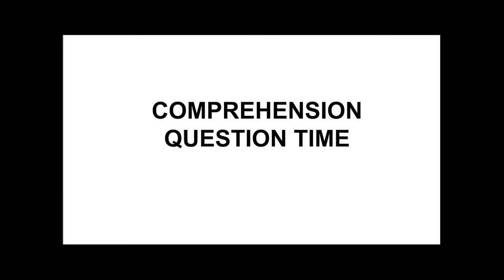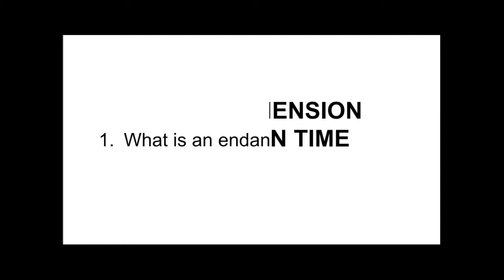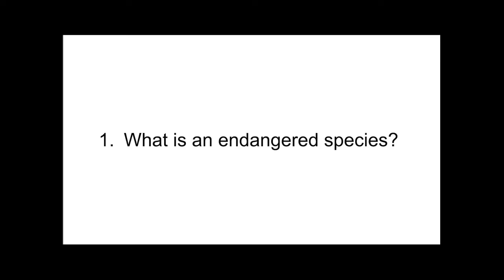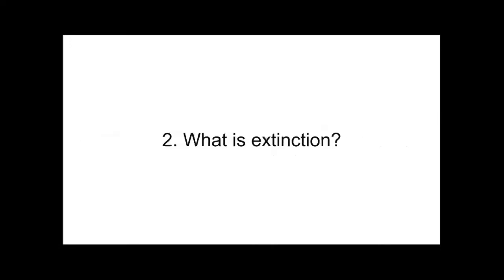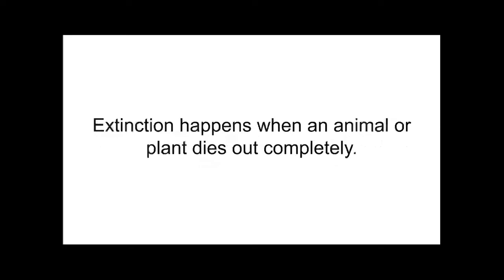Scholars, it is comprehension question time. You have two ways to complete this — after hearing the question, pause the video and you can answer orally or tell a person in your family, or you can write down the answer. When you have that done, go ahead and restart the video and compare your answer to mine. Number one: what is an endangered species? Endangered species are groups of animals that could die out because there are so few still living. Number two: what is extinction? Extinction happens when an animal or plant dies out completely.